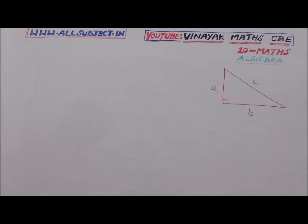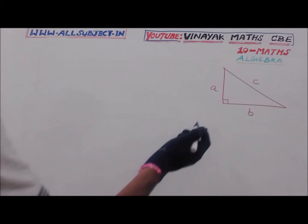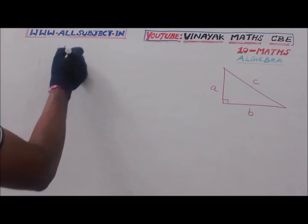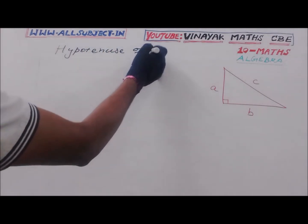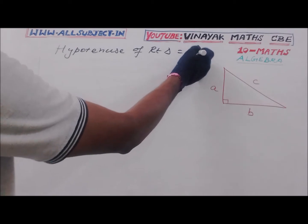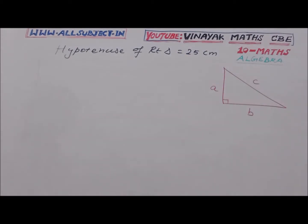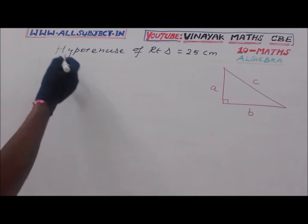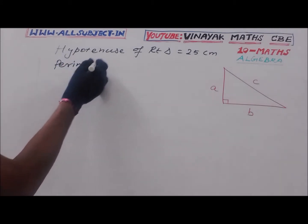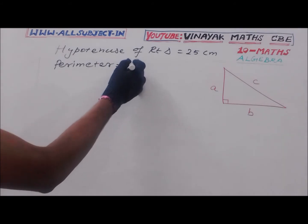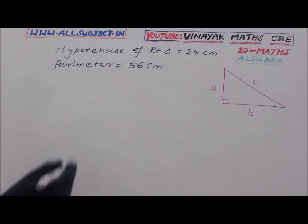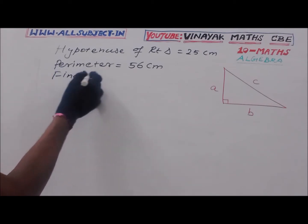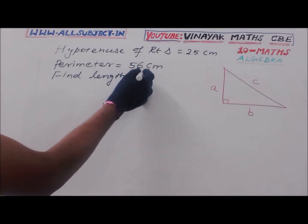The hypotenuse of a right angle triangle is 25 centimetres, and its perimeter is 56 centimetres. Find the length of the smallest side.